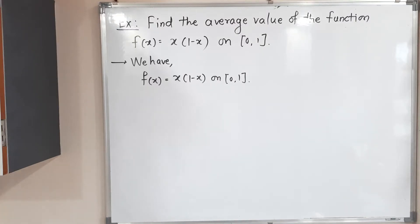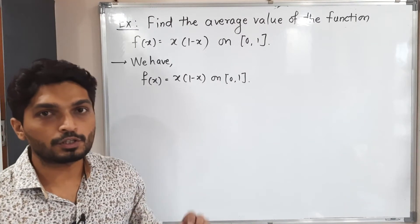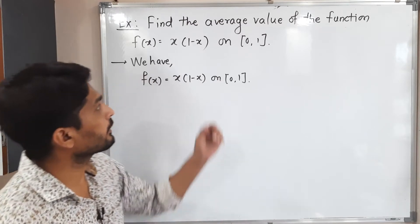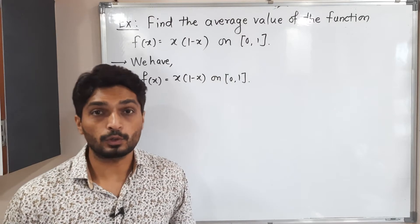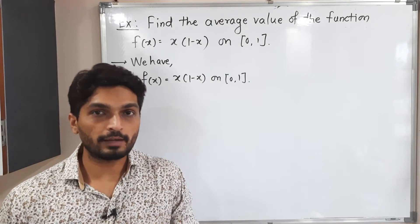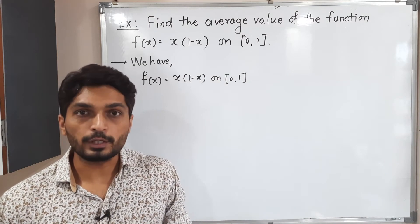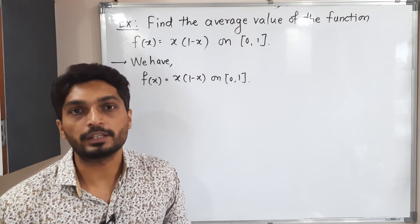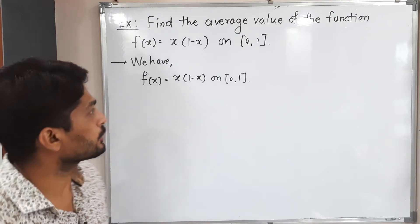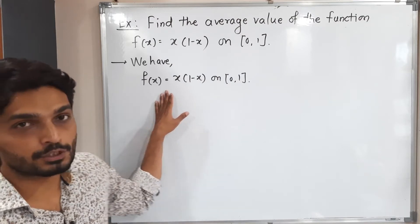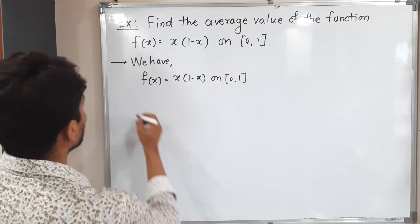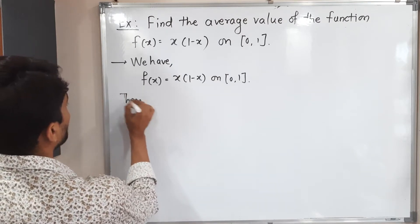Hi everyone, let us discuss this example. We have a function f defined as x(1 minus x) on the closed interval [0, 1]. We have to find its average value. In the previous two videos we have already seen how to solve problems of this type, so let us start to solve this problem. First of all, we write the given function, which we have already done here.